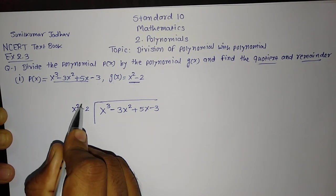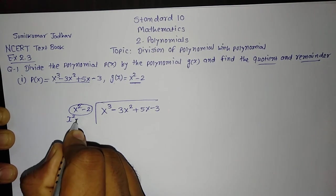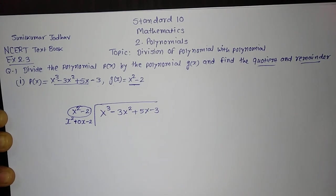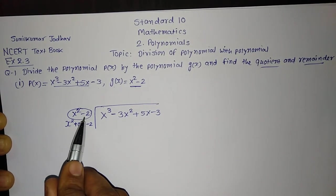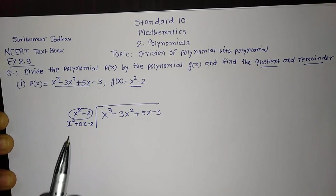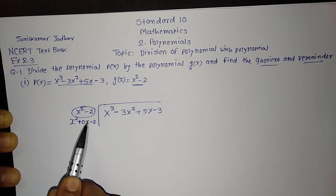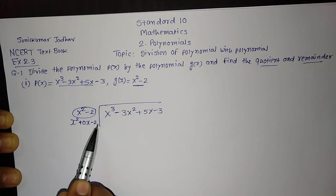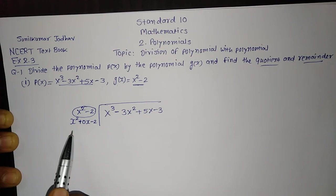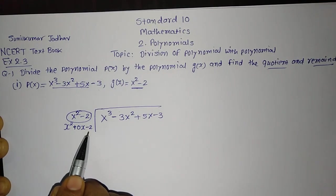So we have to write it in this format, that is x²+0x-2. So you should understand, instead of dividing x²-2, we have to divide with x²+0x-2. Means, we have to write it in a sequence of decreasing order of its power, that is power 2, power 1, power 0. You know, x raise to 0 is equal to 1, it will multiply by 2, so it will be minus 2.